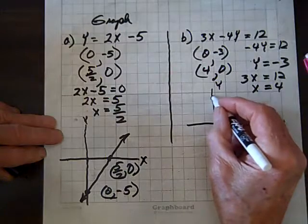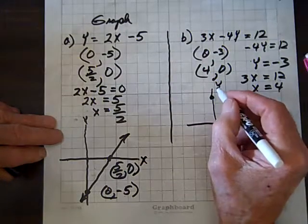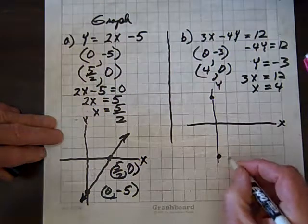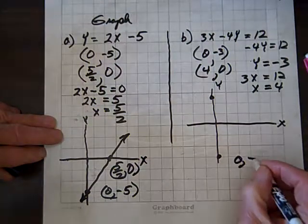And here we are at 4, 0. I beg your pardon. Excuse me, error there. Here we are at 0, negative 3.